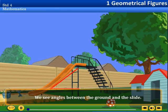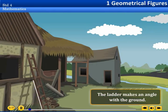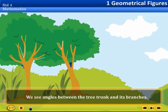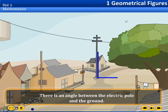We see angles between the ground and the slide. The ladder makes an angle with the ground. We see angles between the tree trunk and its branches. There is an angle between the electric pole and the ground.